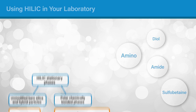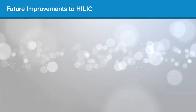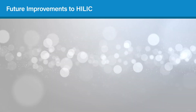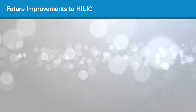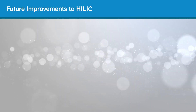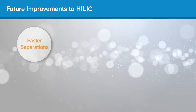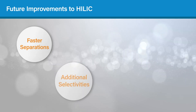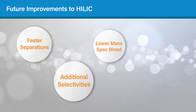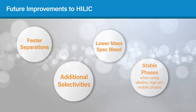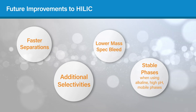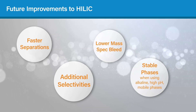With all the work over the years that has been done to improve and expand HILIC, there are still unmet needs that are being explored. Specific needs are for faster separations, additional selectivities, lower mass spec bleed, and chemical stability, specifically when using alkaline high pH mobile phases.